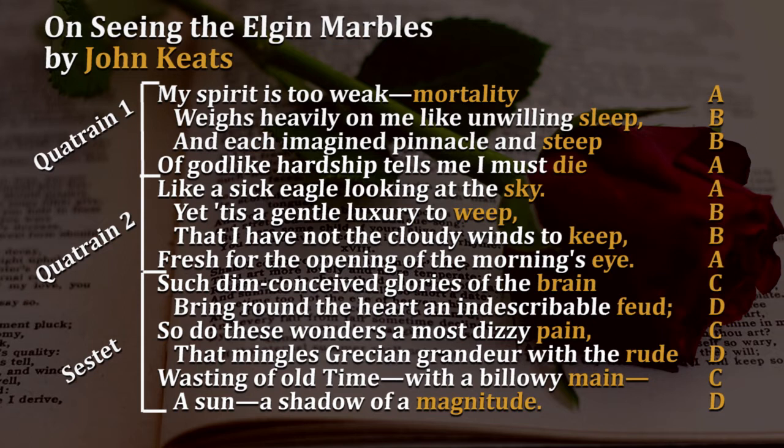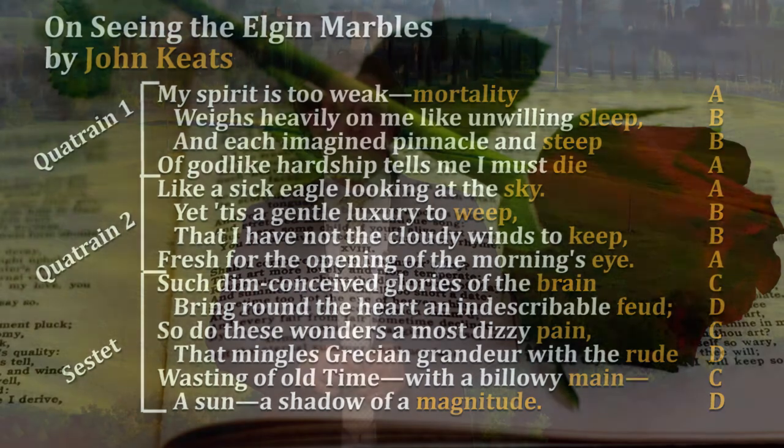So again, the Petrarchan sonnet: basically 14 lines, iambic pentameter, rhyming A, B, B, A, A, B, B, A in the octave, and then a sestet rhyming C, D, C, D, C, D, or C, D, E, C, D, E.